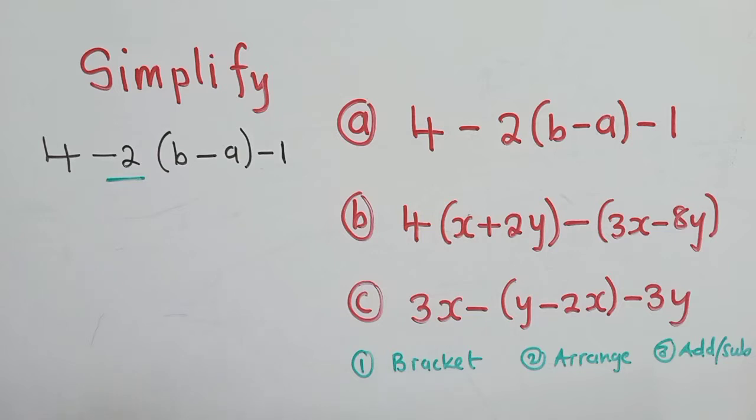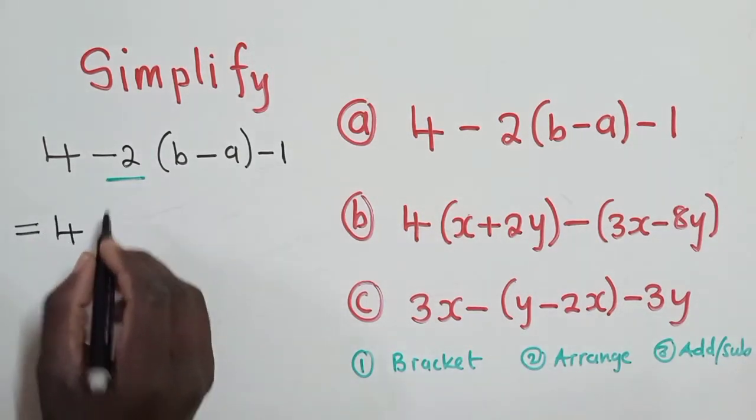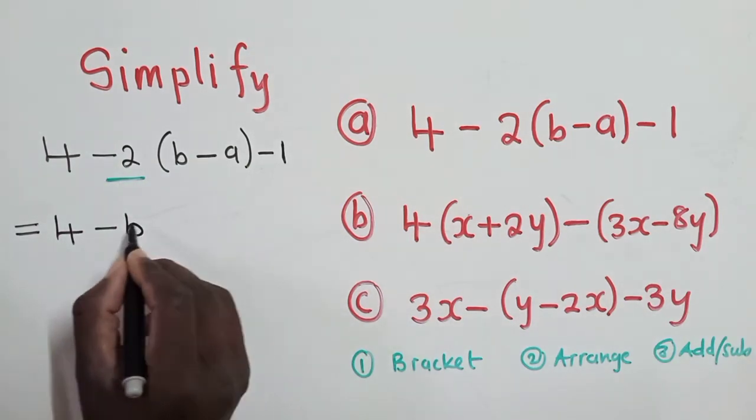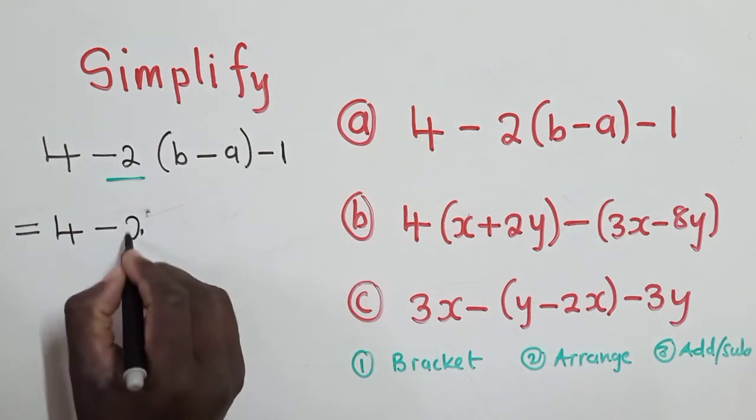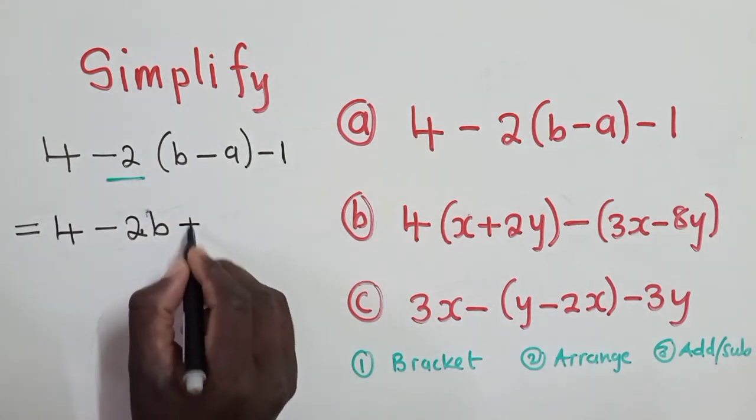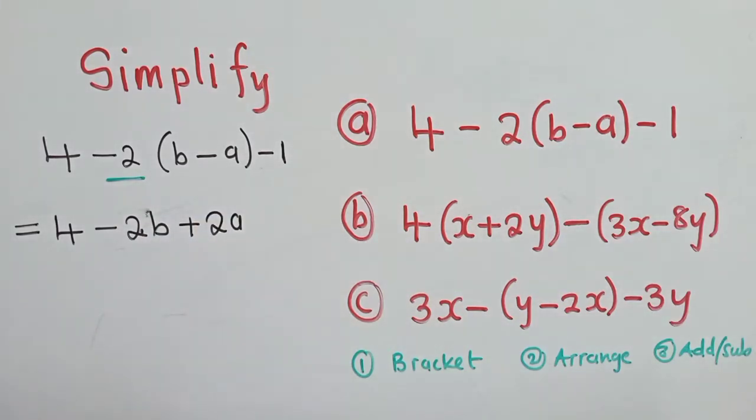So you should have a 4 here. Negative 2 times b, it will be negative 2b. Negative times negative, it will give us a positive. 2 times a, it will be 2a. So remember here, this is very important. It's very important.